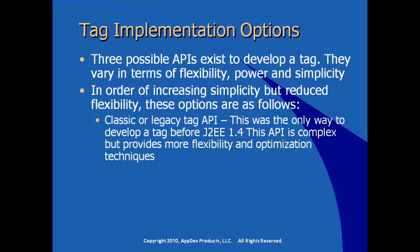We have the classic or legacy tag API. Prior to J2EE 1.4 — and we're at Java EE 5.0 now — this was the only way to develop a tag, and it was overwhelmingly complex for JSP developers to understand. It does give more flexibility and optimization techniques. In my experience, only the Java developers got excited about this API because they were constantly writing Java code that needed to support custom tags — having a traditional Java API made their jobs easier. But for JSP developers, it seemed like an awful lot of complexity just for simple custom tags.